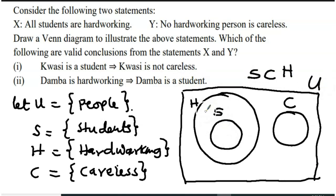Students are a subset of hardworking. And because hardworking people have nothing to do with careless people, because they are disjoint, so we draw them separately like this.